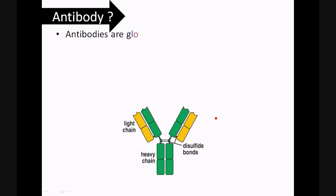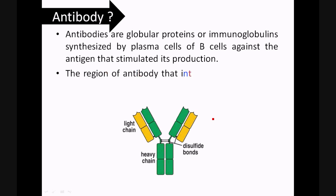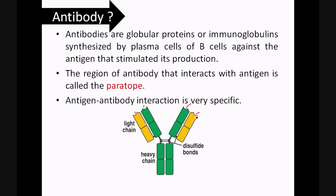First of all, what is an antibody? Antibodies are globular proteins or immunoglobulins synthesized by plasma cells or B cells against the antigen that stimulated their production. The region of the antibody that interacts with the antigen is called the paratope. In the antibody molecule, which is a Y-shaped structure, this region is the paratope. Antigen-antibody interactions are very specific, and each antibody is designed to interact with a specific epitope present on an antigen.